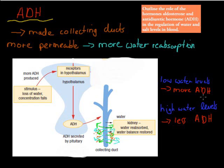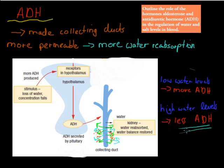If we have low levels of water — if we're dehydrated — we're going to produce more ADH to bring our water levels back up. Whereas if we're overhydrated, we want to make sure that water leaves via the urine, so we're going to produce less ADH. That's the whole homeostasis: two responses in case we have too much or too little. If we've got too much, we produce less ADH; if we have too little, we produce more ADH.